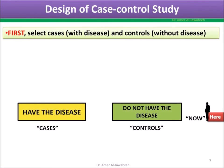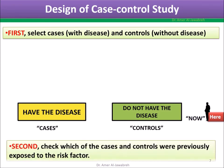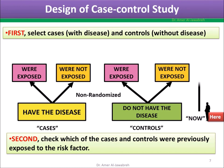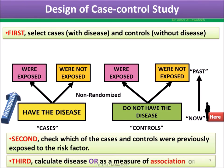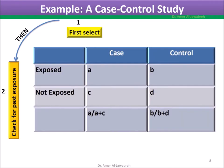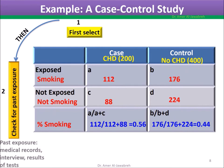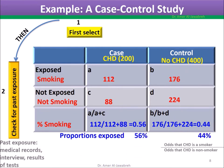Study design: First, select cases and controls. Second, go back in time and check cases and controls for risk factor exposure. Third, measure association by calculating odds ratio. In the example: select cases and controls, then check for past exposure by reviewing medical records or interviewing. Calculate proportions exposed in both cases and controls, then calculate the odds ratio by cross multiplication.